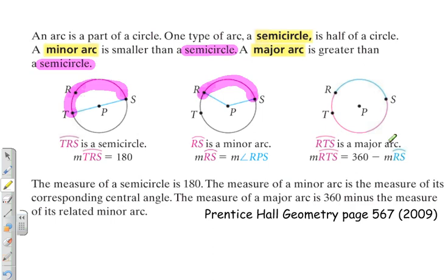Arc RTS is a major arc. The measure of arc RTS is equal to 360 degrees minus the measure of arc RS, the corresponding or the related minor arc.